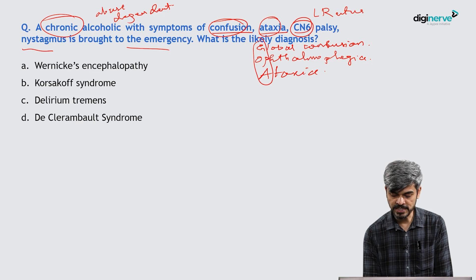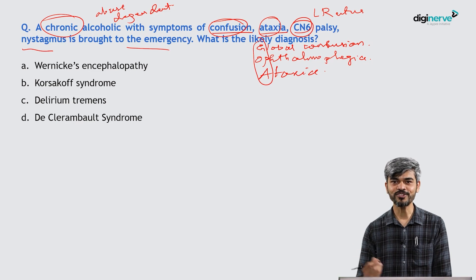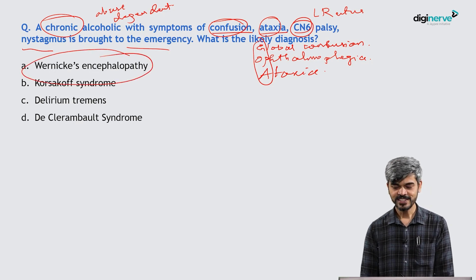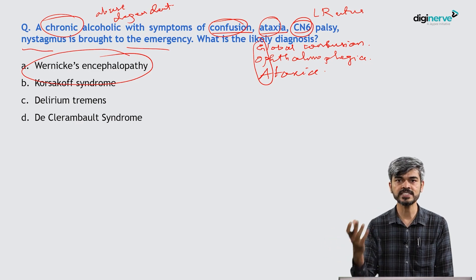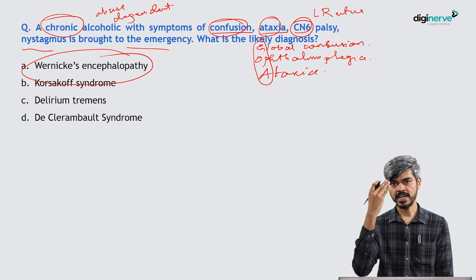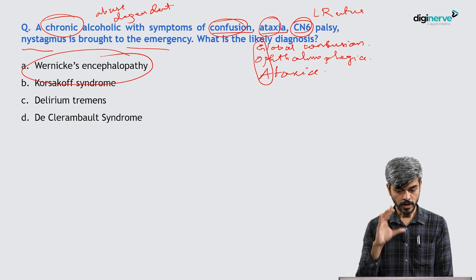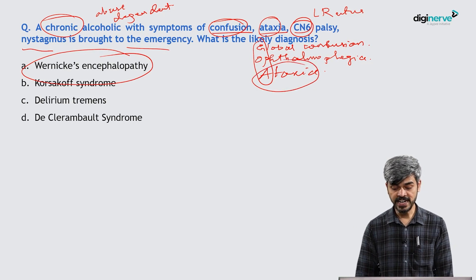The mnemonic to remember here is GOA: you go to Goa and drink a lot of alcohol, and you may end up developing Wernicke's encephalopathy. The answer is Wernicke's encephalopathy, which presents with global confusion — disoriented, unable to recognize where he is, difficulty remembering things — plus ophthalmoplegia or nystagmus, and unsteady gait or ataxia.